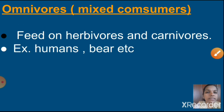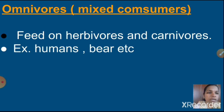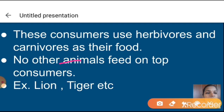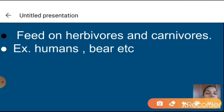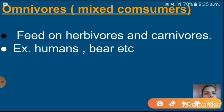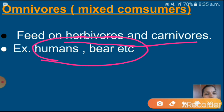Next one is omnivores, or mixed consumers. These organisms feed on herbivores and carnivores — that's why we call them omnivores. Examples: humans and bear, etc.